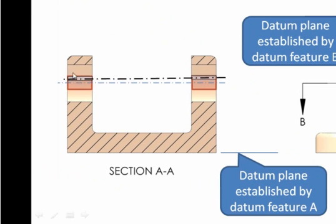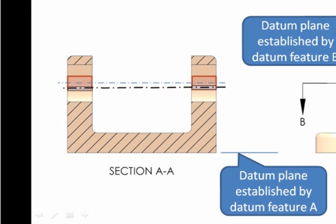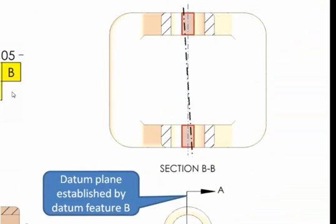The axis cannot go outside of the 0.4, and because of the second segment that we've added, the axis cannot tip more than 0.25 with respect to that plane established by our primary datum feature A. Since I didn't repeat B—I could have, but since I didn't repeat it—you'll notice that the axes can be out of parallel as much as 0.4 with respect to the datum plane established by datum feature B.